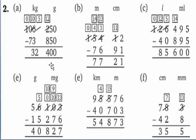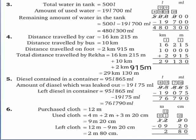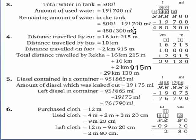Now question number 3: A tank was filled with 500 litre of water. During the day, 19 litre 700 ml of water was used. How much water was left in the tank at the end of the day? Write statement first — total water in tank equal to 500 litre, amount of used water equal to 19 litre 700 ml. Remaining amount of water, iske liye hum subtract karenge. So our answer is 480 litre 300 ml.